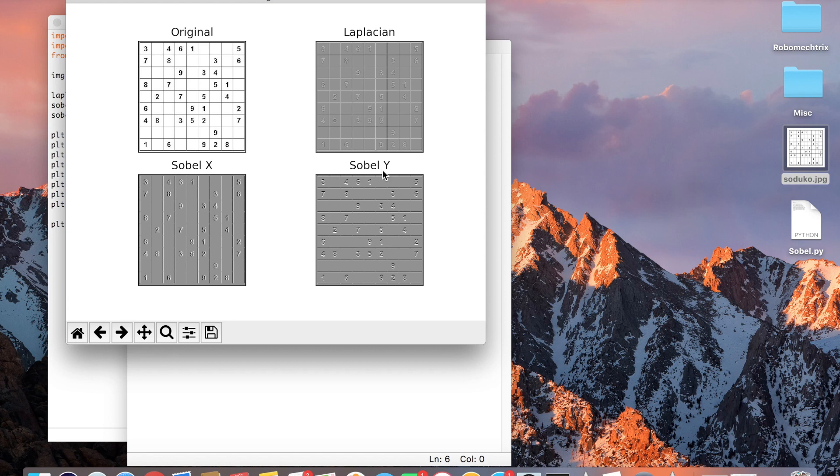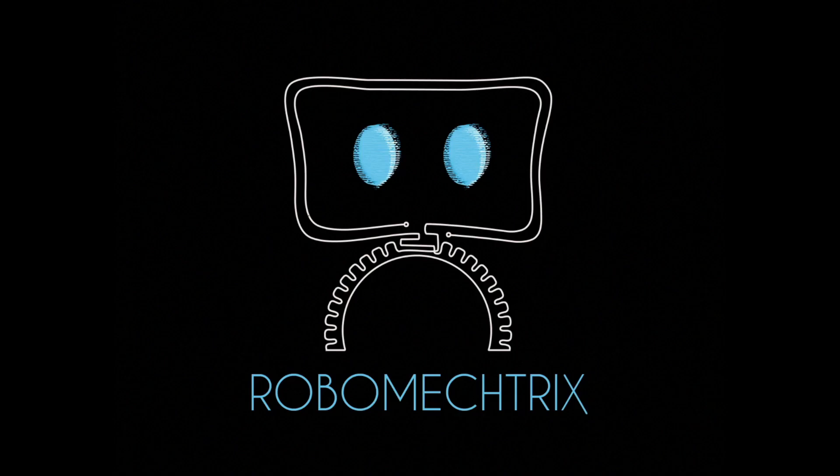So in short, Sobel X and Sobel Y can be combined together to detect accurate edges over the image. So that brings us to an end for another edge detector called Sobel. Stay tuned, RoboMetrics.